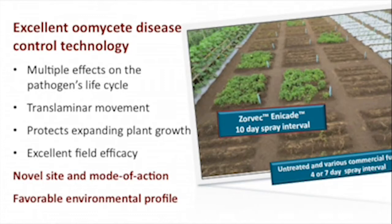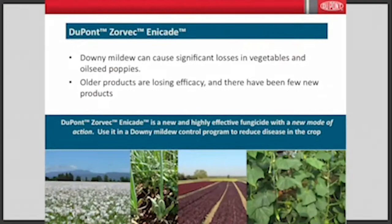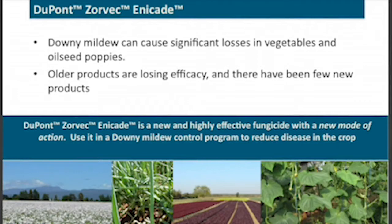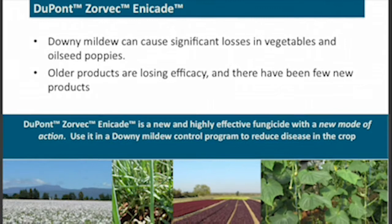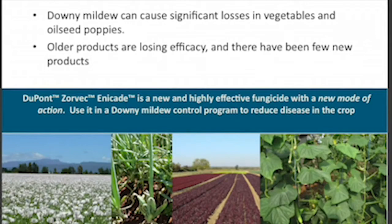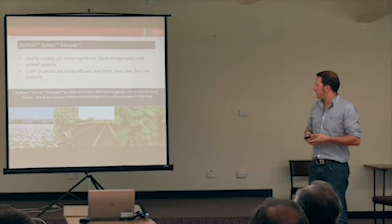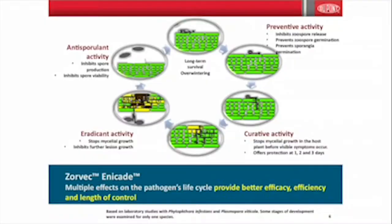It's a novel site and a new mode of action, which is very exciting for these diseases — there hasn't been a lot coming out for them lately. It's quite favorable in terms of environmental profile. Downy mildew in veggie crops and poppies can be pretty destructive, and some older products are losing efficacy, so we're really happy that NECADE is coming out now.